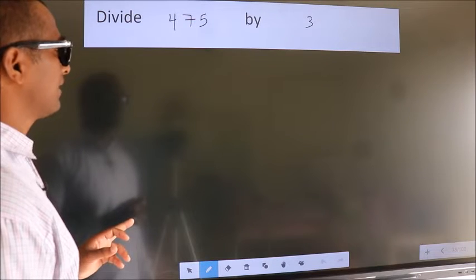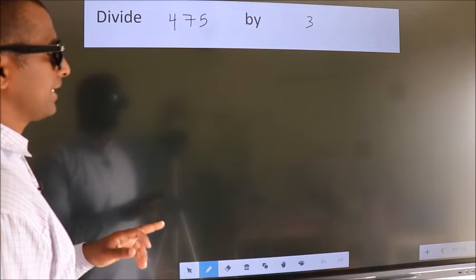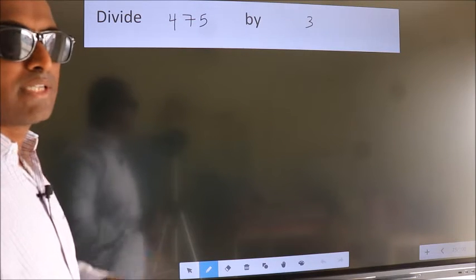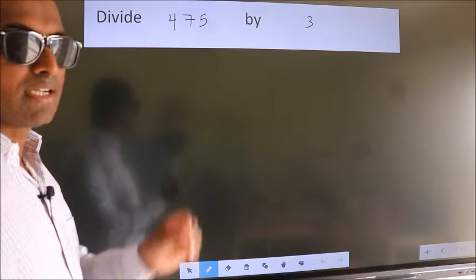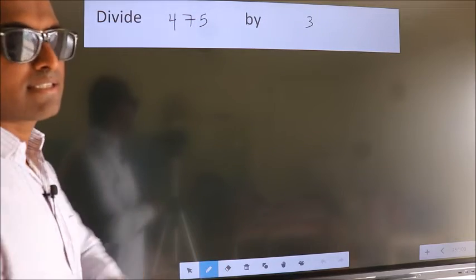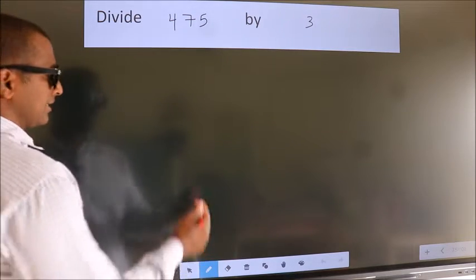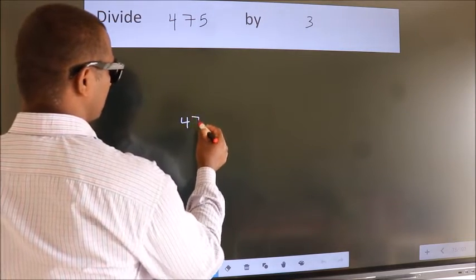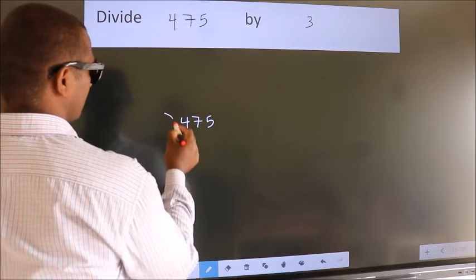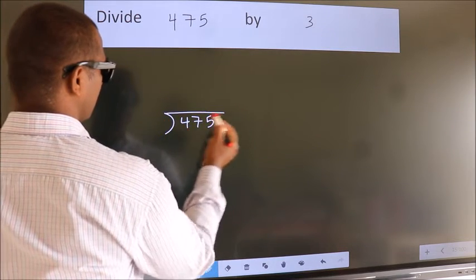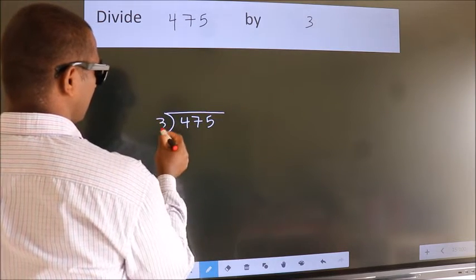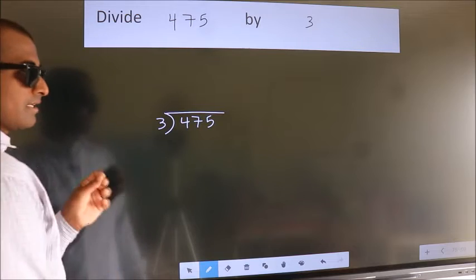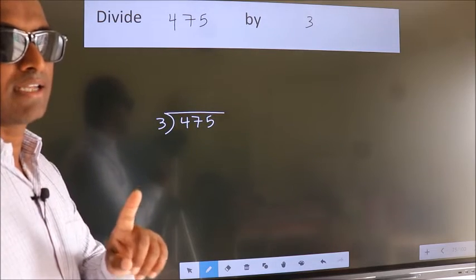Divide 475 by 3. To do this division, we should frame it in this way: 475 here, 3 here. This is your step 1.